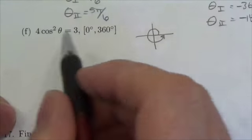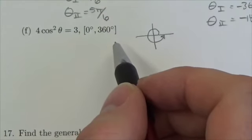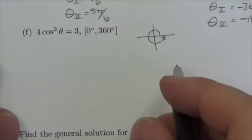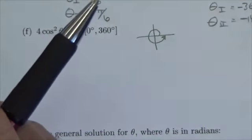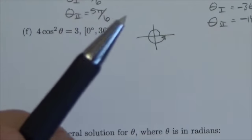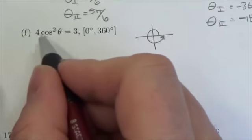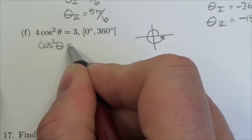Now I look at my equation: 4 cosine squared of theta is equal to 3. This is in the form of a quadratic, and in a lot of the previous questions I've used a variable, but in this case this is a very simple equation to work with.